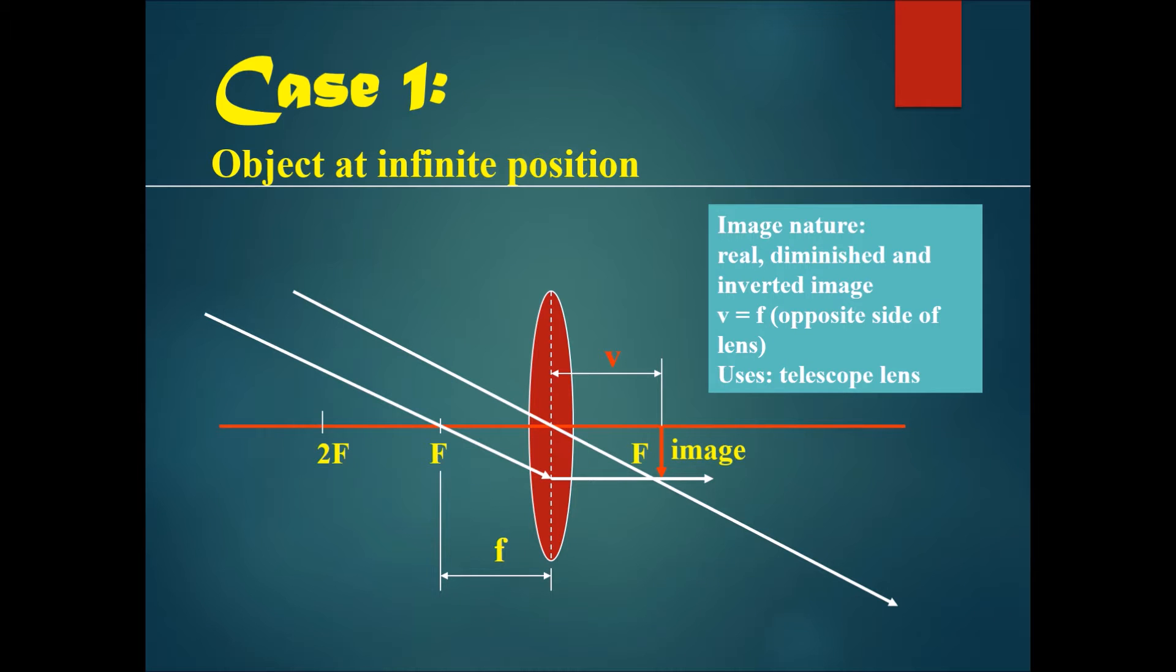Now this is quite important. We're going to talk about different cases whereby the objects produce different kinds of images when they start off at different places.